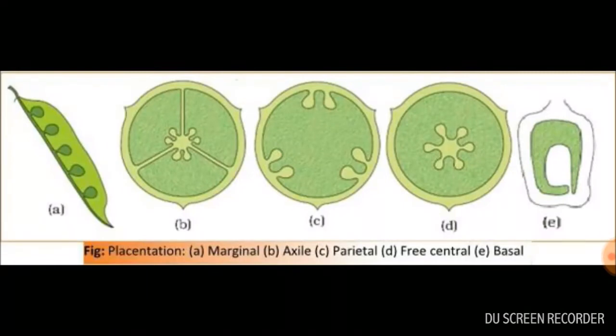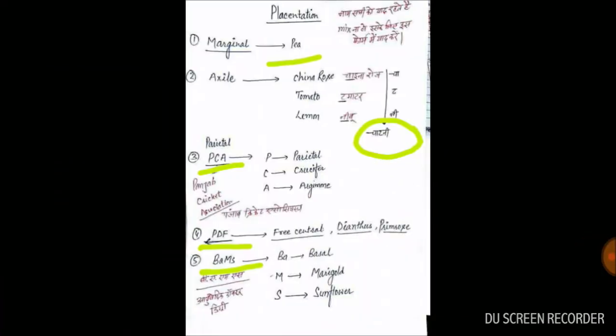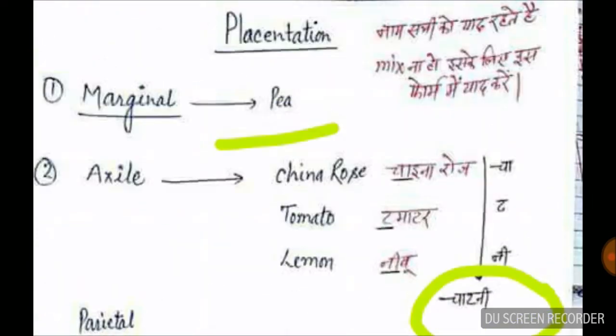Hello everyone, welcome to my channel NeatNotes. Today I will explain a trick to help you remember the names of all types of placentation. There are five kinds of placentation: marginal, axile, parietal, free-central, and basal. Now let's see the tricks to remember all these.